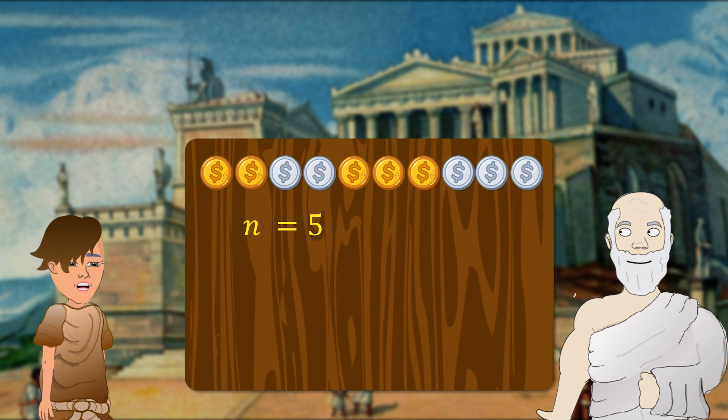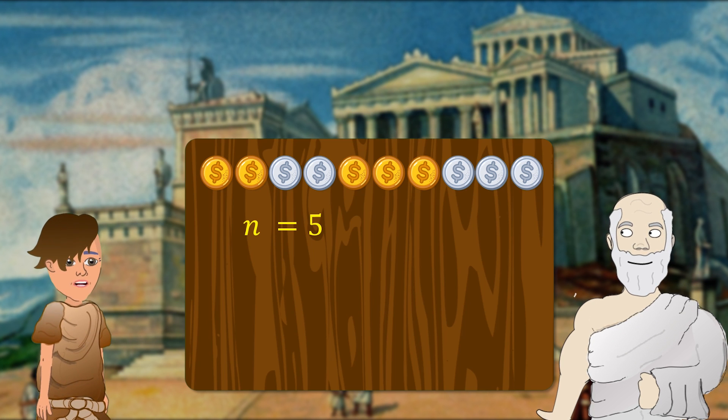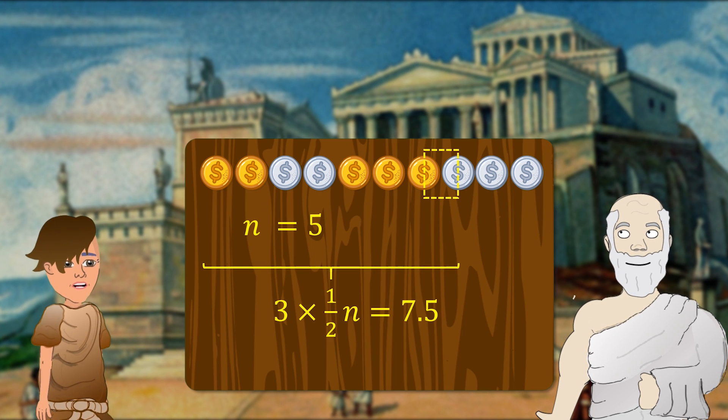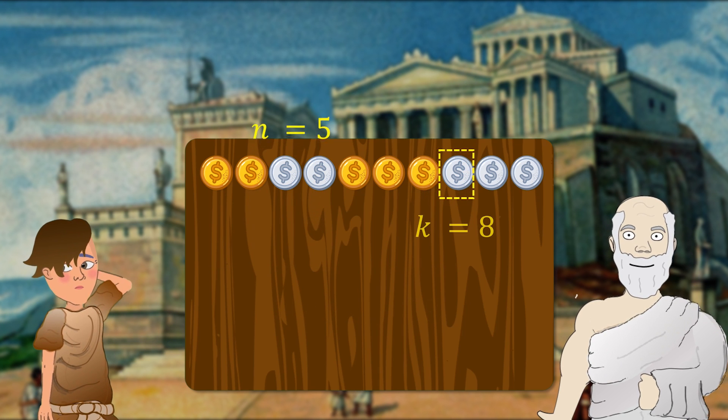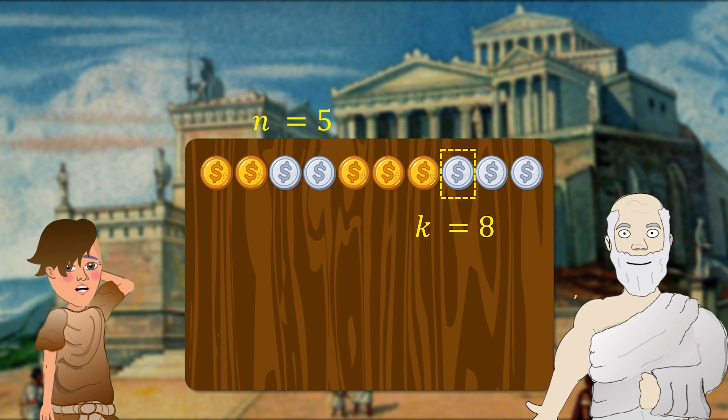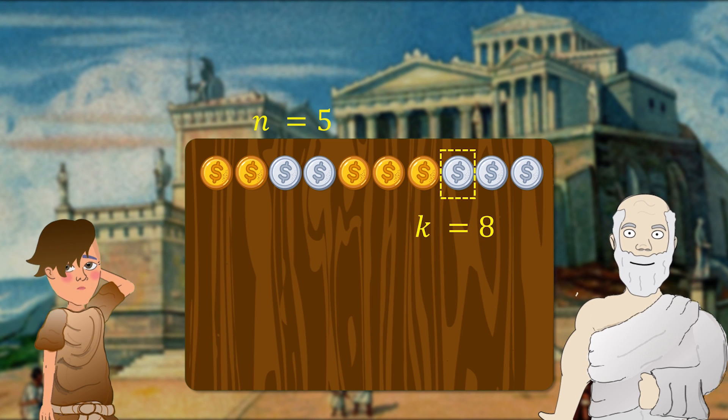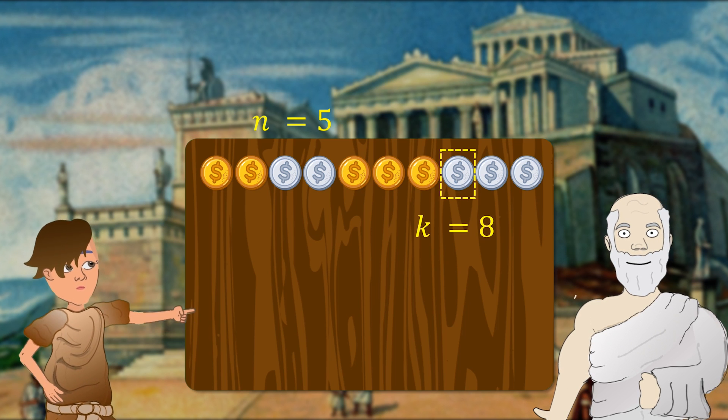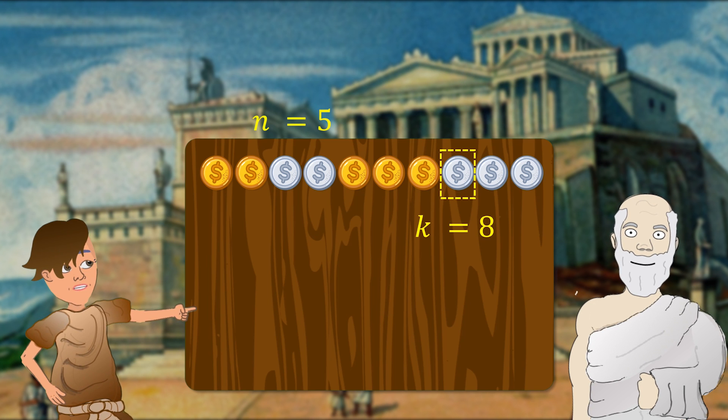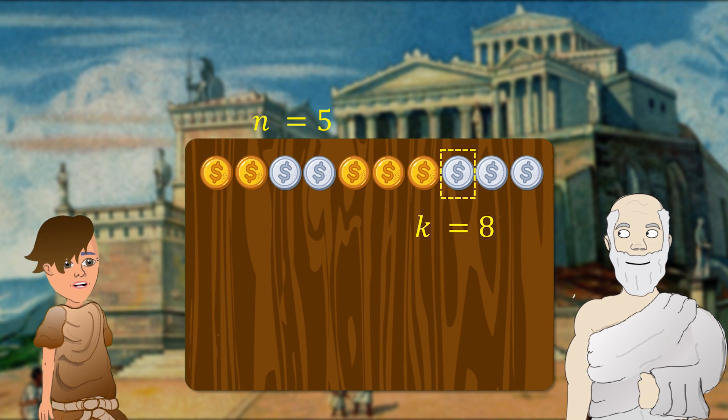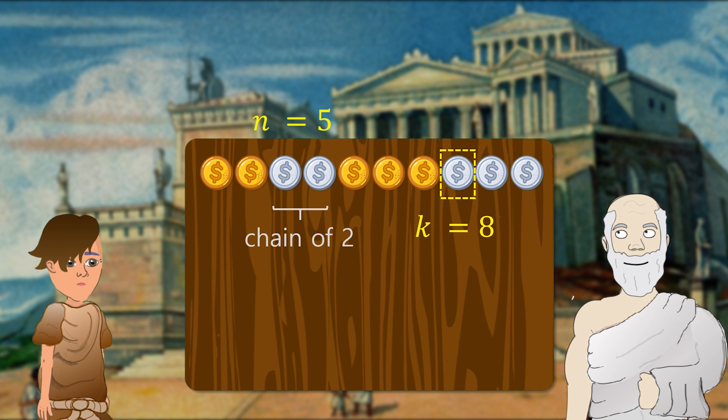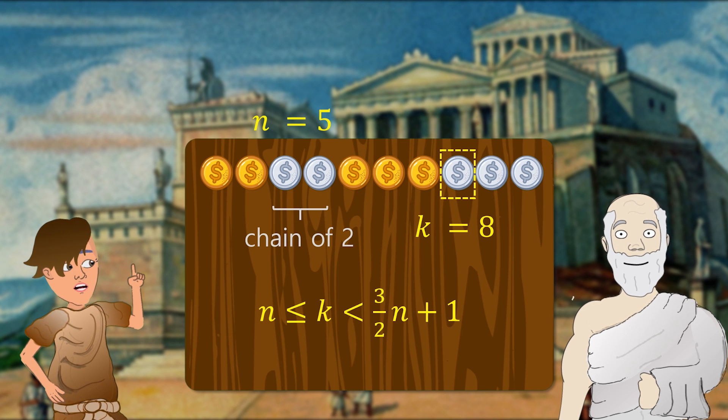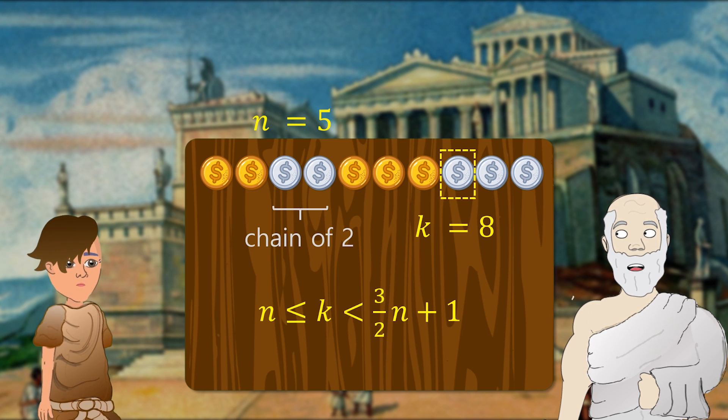Okay, let me try n equals 5. 3 halves of n would be 7.5. Oh. But actually, n is equal to 5, k is 8 would also give a solution. Because chains of at least 3 would be required to extend to the end of the row. So, for odd n, the k must be less than 1 above 3 halves of n. You are correct, boy.